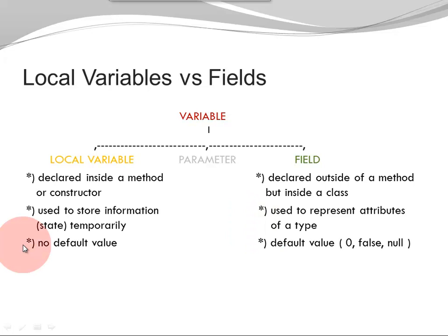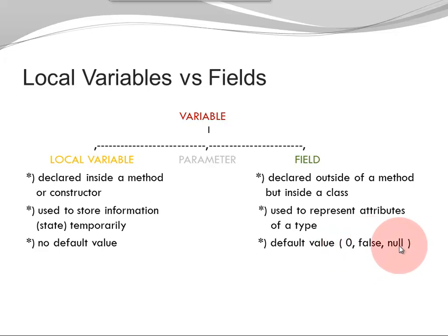Local variables have no default value. If you declare a local variable and you do not initialize it, your local variable is undefined. Fields do have a default value. It is zero for all primitive types that represent numbers as well as for character, it is false for boolean, and it is null for all reference types.